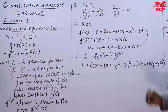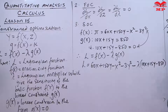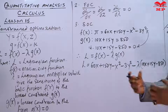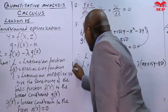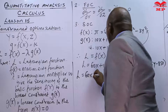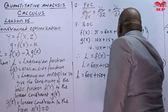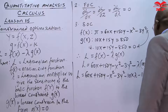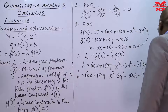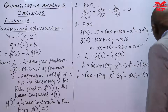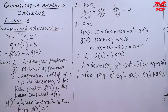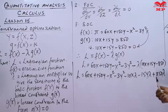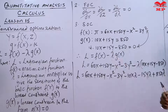Expanding the bracket, noting the negative sign outside affects all terms, we get L = 60x + 150y − x² − 3y² − 10λx − 15λy + 850λ. There are no like terms to combine, so we proceed directly to the first-order conditions.